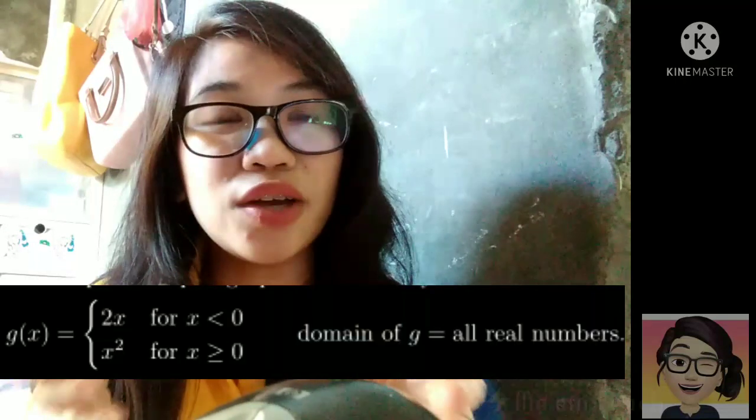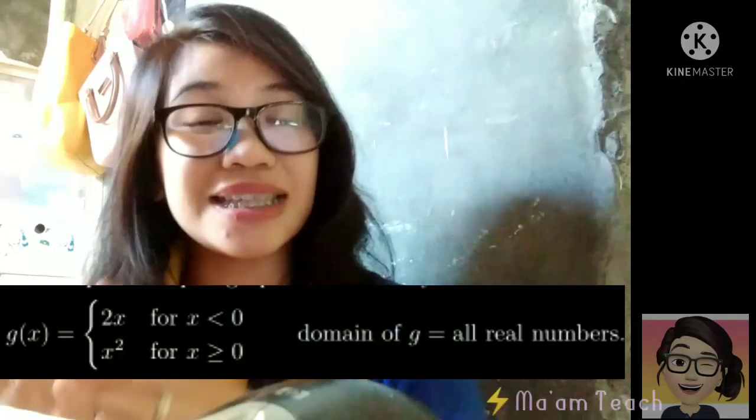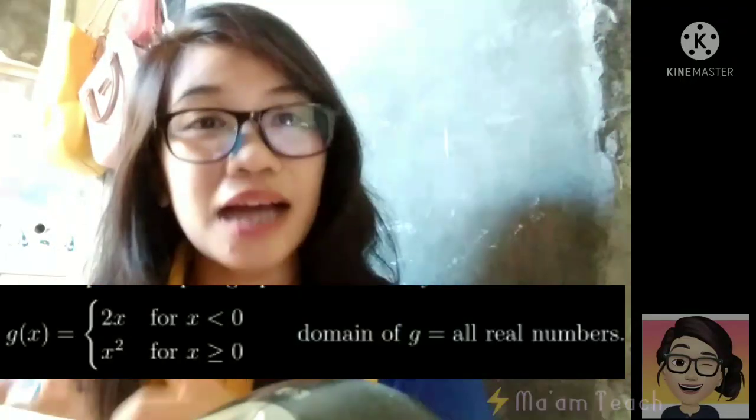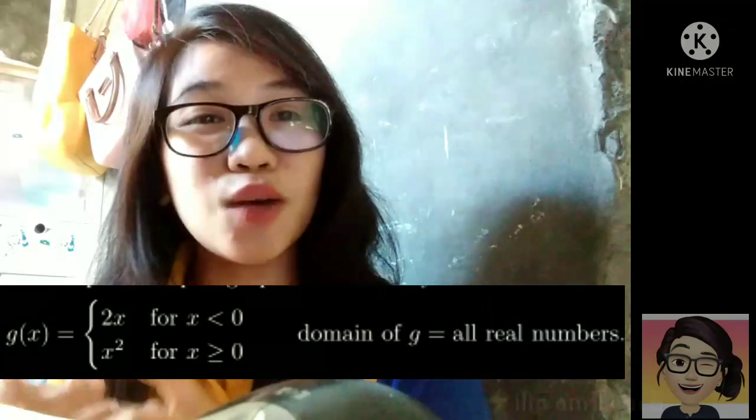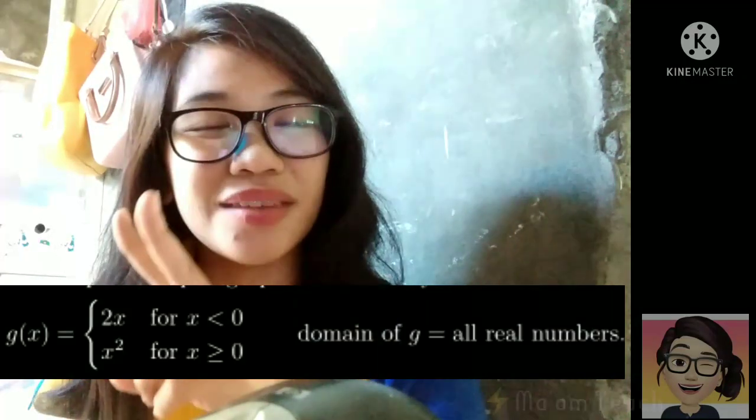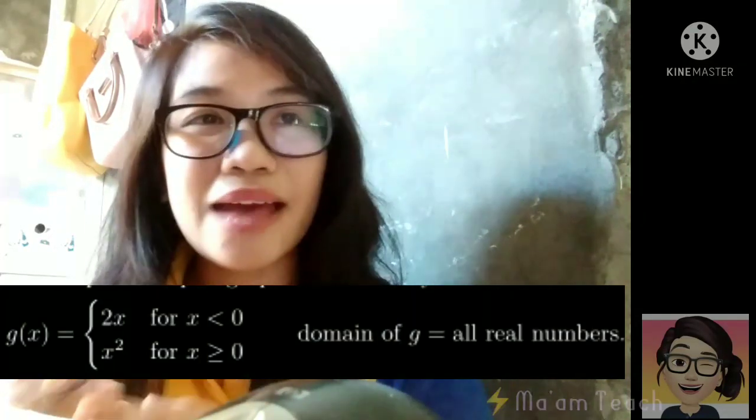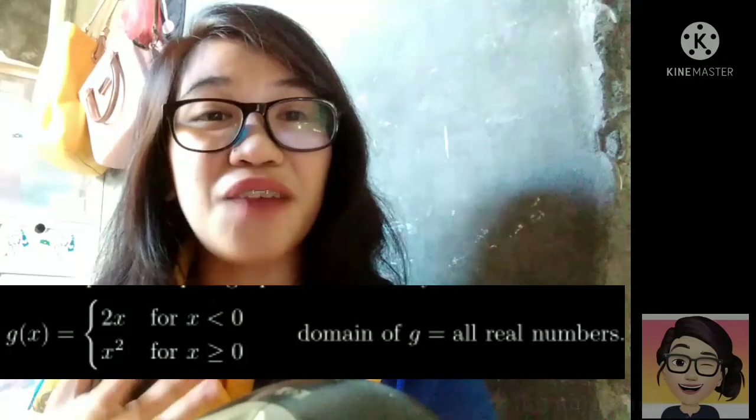Yung interval natin dito is yung una, x should be less than 0. And yung isa, x should be greater or equal to 0. So dalawa. So again, this is called piecewise defined functions.